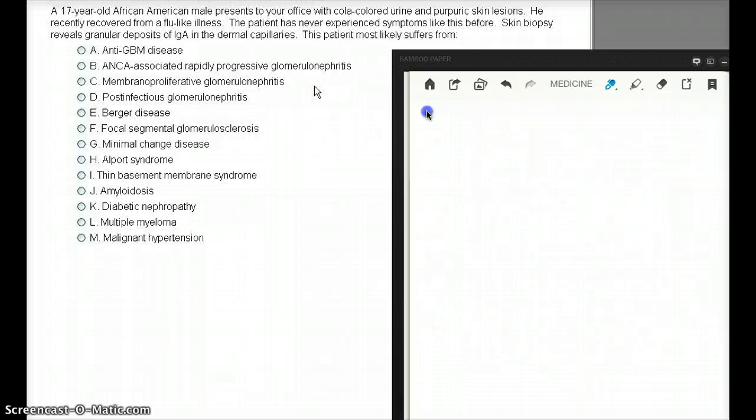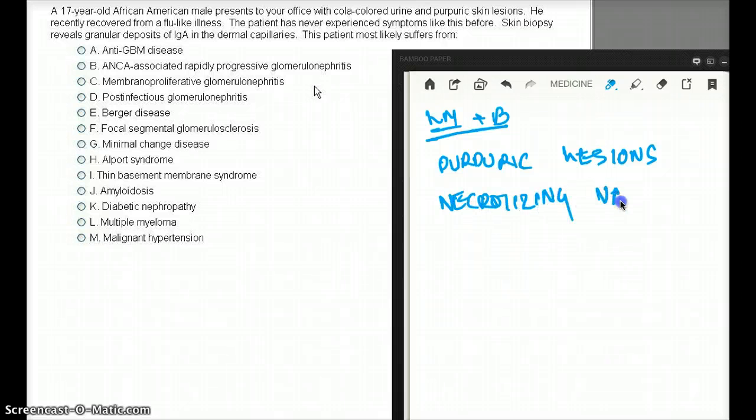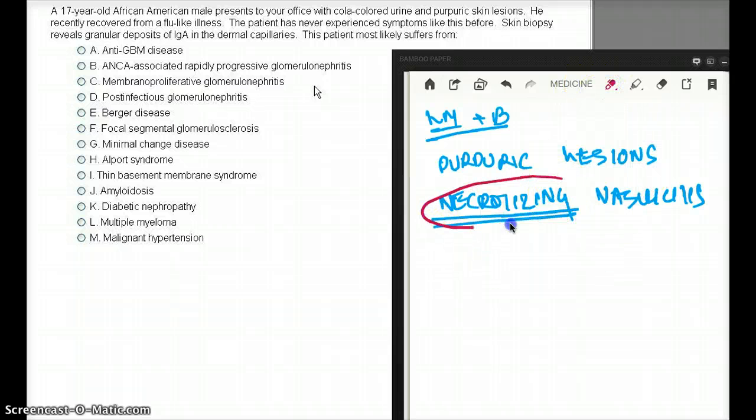Now, let's talk about light microscopy and biopsy a little bit in more details. When this purpuric lesion in the skin is biopsied, we should be able to see necrotizing vasculitis. What are some of the vasculitis we know of? We know of PAN. We know of Wegener. Those cause vasculitis as well. But IgA nephropathy is going to cause necrotizing vasculitis is going to be seen on dermal vessels.